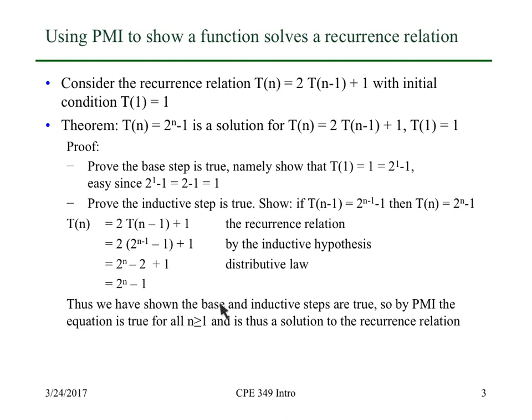We've shown the base case and we've showed the inductive case. By the principle of mathematical induction, we know the equation is true for all n, and this is a solution to the recurrence relation. That gives us a formal proof so we know if we have a sequence defined by this recurrence relation, then a closed-form solution is 2^n - 1.